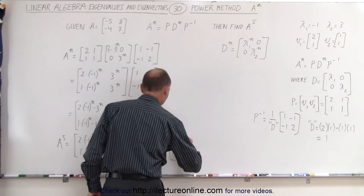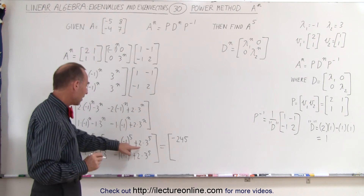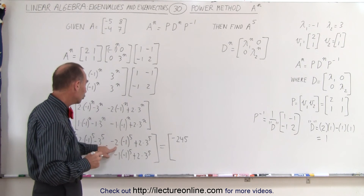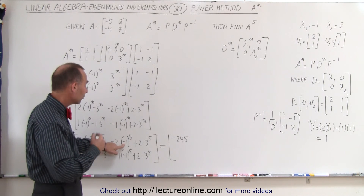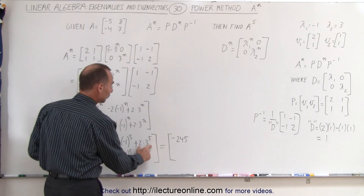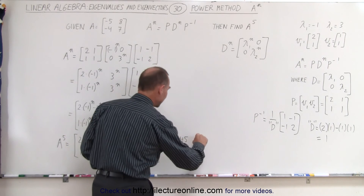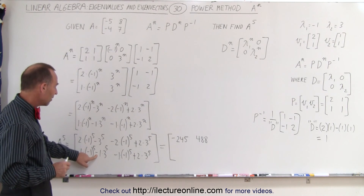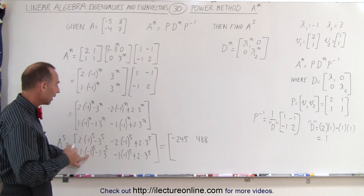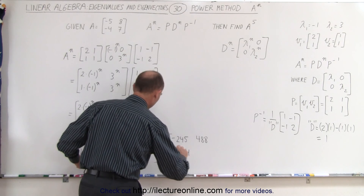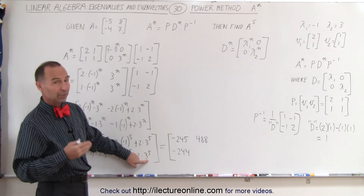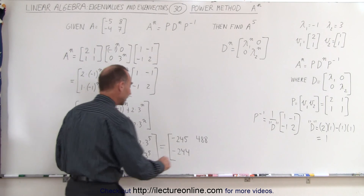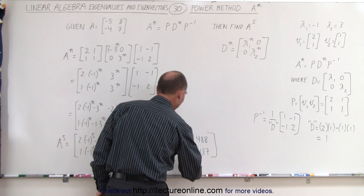For the upper right element, we have 2 times 3 to the 5th minus 2 times negative 1 to the 5th: 2 times 243 is 486, and negative 2 times negative 1 is plus 2, giving 488. For the lower left, we have negative 1 to the 5th minus 3 to the 5th: negative 1 minus 243 equals negative 244. For the lower right, 2 times 3 to the 5th plus negative 1 times negative 1 to the 5th: 486 plus 1 equals 487. This is A to the 5th power.